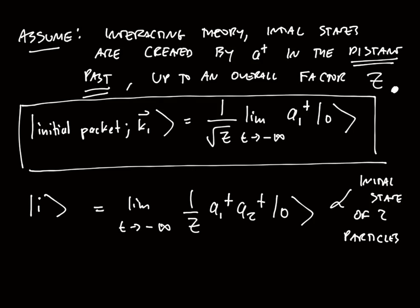They have momentum k₁ and k₂. Now I also want a final state. My final state, as you can imagine, will be described in a very similar way. My final state is described in the future, so it's limit as t goes to plus infinity, 1 over z times a₁' dagger a₂' dagger acting on the vacuum. These 1 prime and 2 prime denote the momenta of the final state - so k₁ prime and k₂ prime - and again these are wave packets around these momenta.